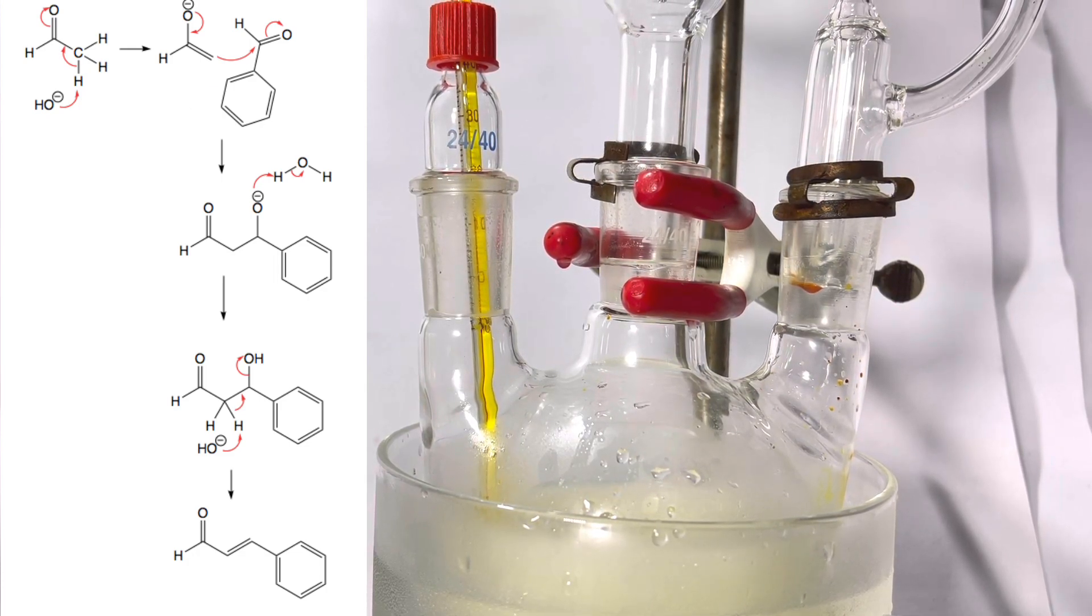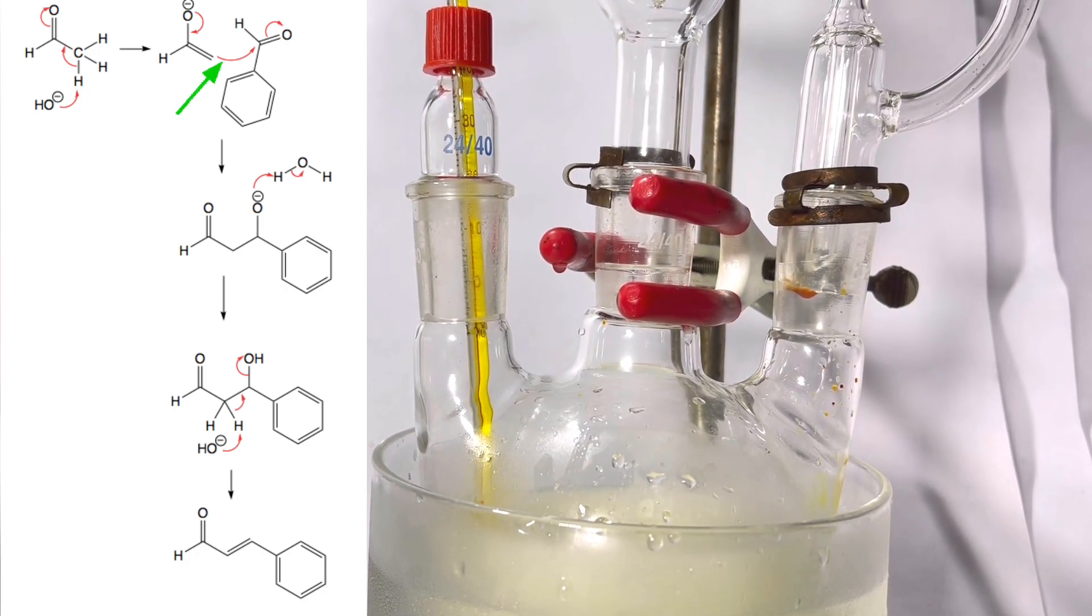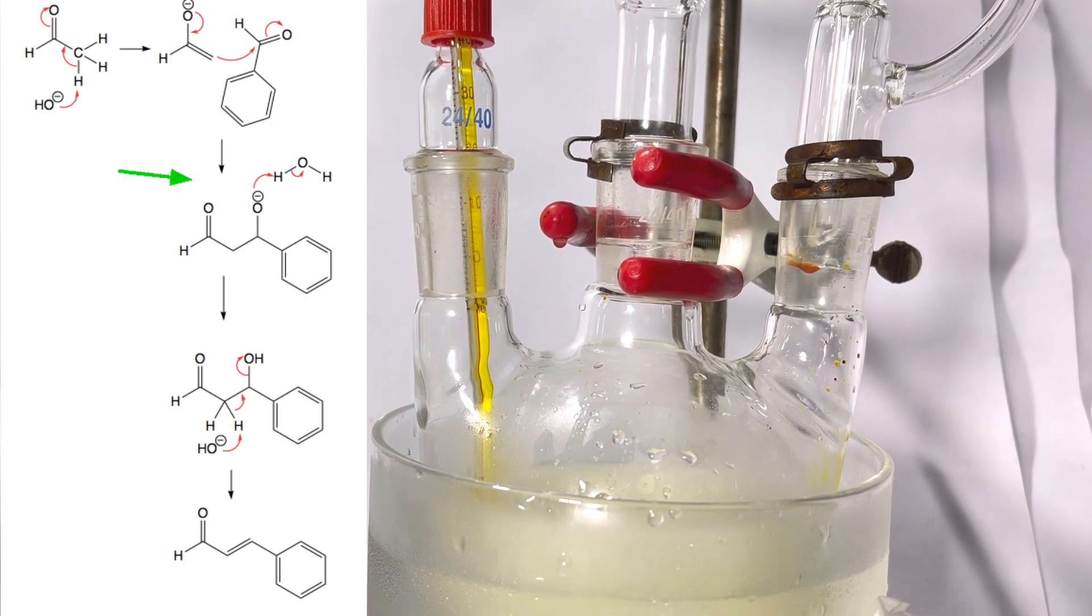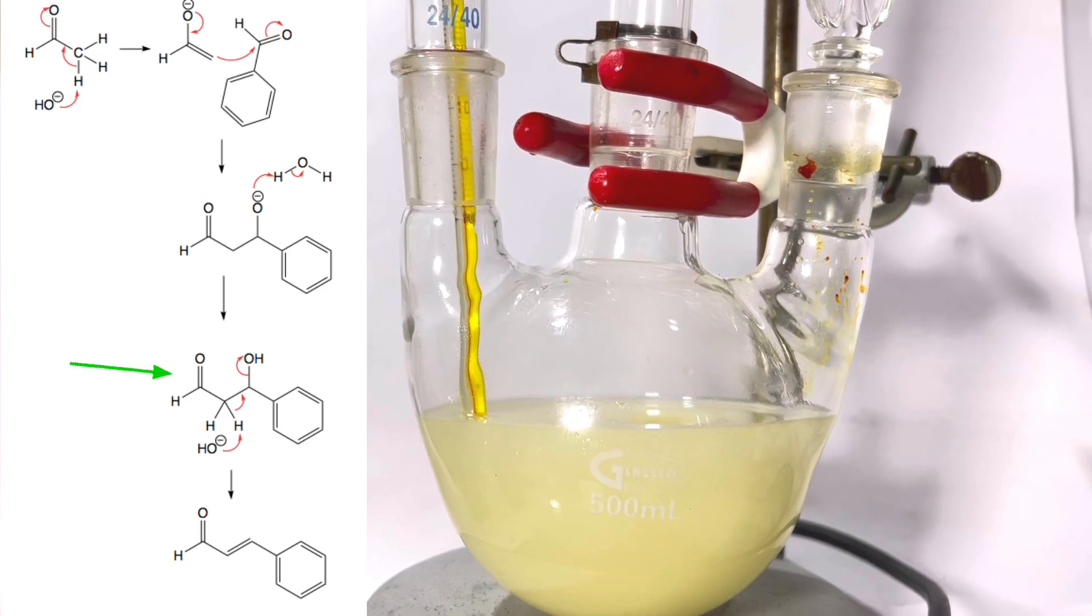Next, the nucleophilic enolate ion reacts with the carbonyl group of the other aldehyde, that is benzaldehyde, forming the alkoxide intermediate, which then gets protonated to form the uncharged aldol addition product.